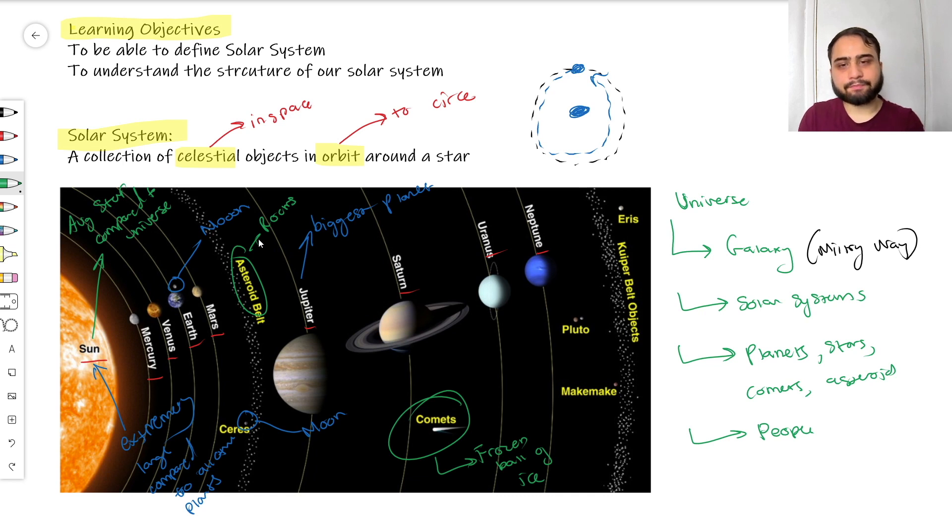Then we also have things called dwarf planets. Now you know these as Pluto. So these are planets that became too small to be classified as planets anymore. They're just really big rocks orbiting the Sun. Another thing I need to tell you about orbits is that comet orbits are not that circular at all.